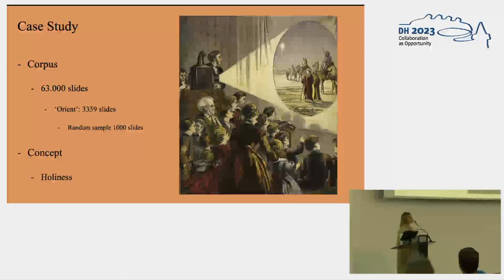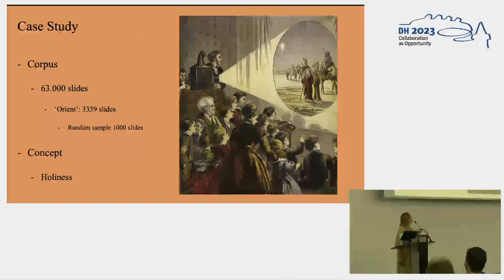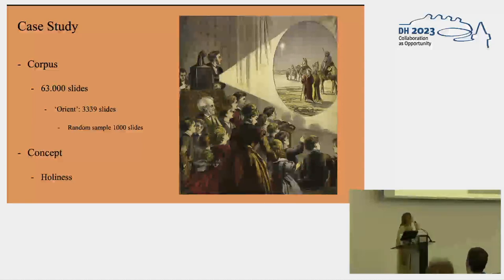Today I'm going to present a case study of a part of my corpus. My total corpus is 63,000 slides, but today we're looking at a subcorpus of 3,339 slides which present the Orient, and within those representations I am especially interested in representations of the Holy Land. Within this corpus of the Orient I took a random sample of 1,000 slides to explore what's in there, because it's such a large corpus.